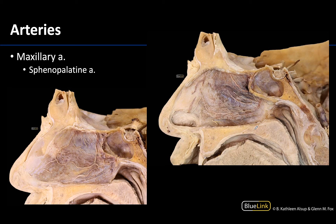Lastly, the sphenopalatine artery is the other terminal branch of the maxillary artery. It is the main arterial supply for the mucosa of the nasal cavity, and it fairly quickly divides into two main sets of branches. You can see a posterior septal branch here — we're looking at the nasal septum, and you can see the vomer bone. Over here you can see a posterior lateral nasal branch, which is the other main set of branches the sphenopalatine gives off, visible on the lateral nasal wall with the concha removed.